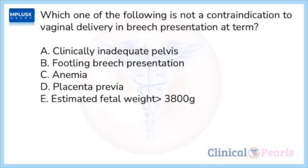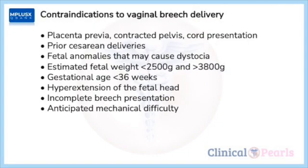Next question: which one of the following is NOT a contraindication to vaginal delivery in breech presentation at term? A) clinically inadequate pelvis, B) footling breech presentation, C) anemia, D) placenta previa, E) estimated fetal weight greater than 3,800 grams. Vaginal breech delivery may be offered provided that there are no contraindications. These include: placenta previa, contracted pelvis, cord presentation, prior cesarean deliveries, fetal anomalies that may cause dystocia.